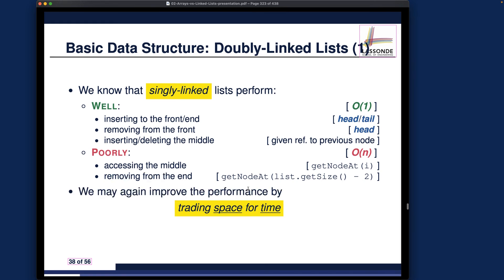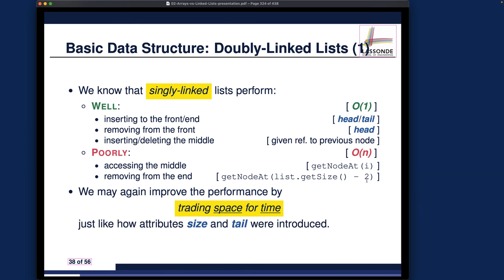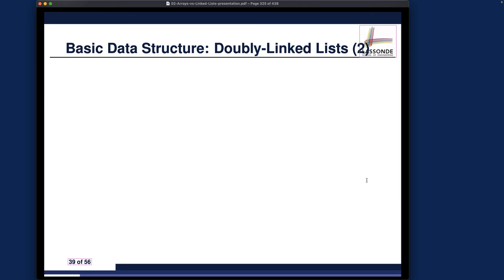Nothing new so far. We may again try to improve performance by trading space for time — could we introduce some extra attributes? By storing more information in each individual node in the chain, could we improve performance from linear down to constant? Just like how we store size and tail attributes so we can return them in constant time, we'd like to do something similar. That's why we want to introduce a new extended notion called a doubly linked list. As opposed to singly linked list — rather than linking only to the next node, each node can also link to its previous node. That's why it's called a doubly linked list.